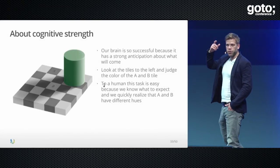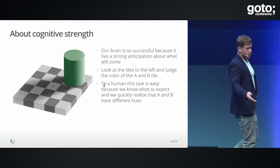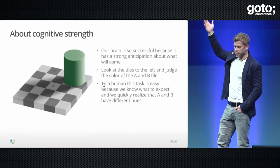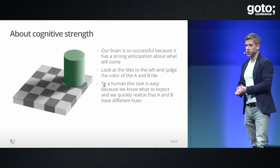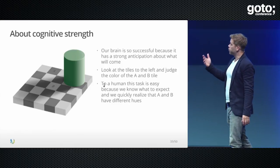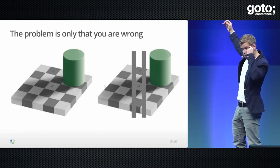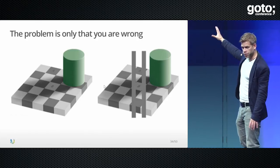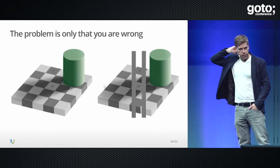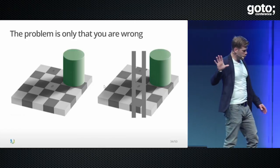You're supposed to judge whether squares A and B are the same hue — from my point of view they look very different, but they're actually the same. The reason many people think they're different is because we're predicting based on a shadow cast from a light source we've recognized from patterns earlier in our lives. That's a kind of confirmation bias — a good one because it allows us to live our lives — but it proves the point that our brains are very biased based on what we already know.